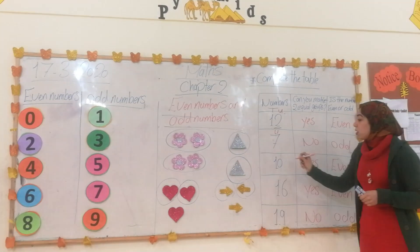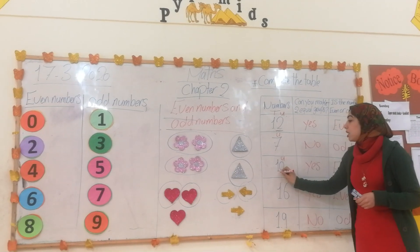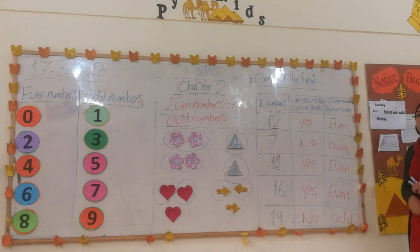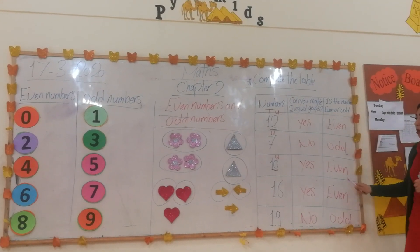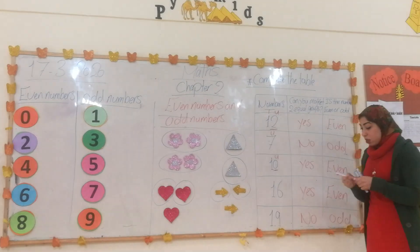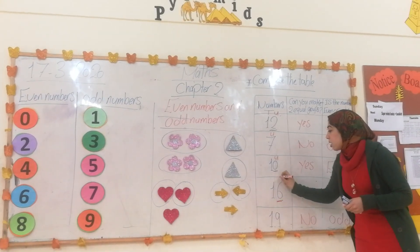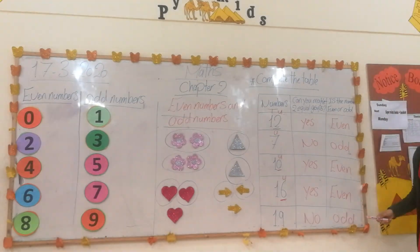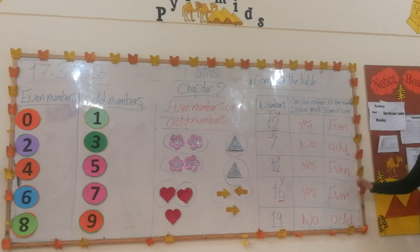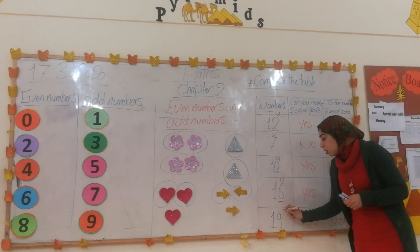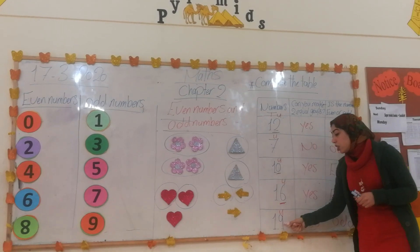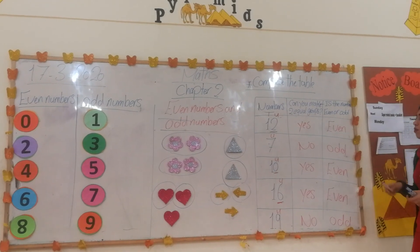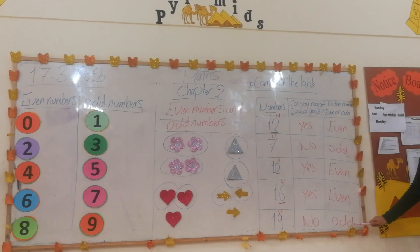We have number 10. Where is the ones digit? The ones digit is zero. Zero is even, so yes, we can make two equal groups — 10 is an even number. We have 16. The ones digit is 6. Six is even, so yes, we can make two equal groups — 16 is an even number. We have number 19. The ones digit is 9. Nine is odd, so we cannot make two equal groups — 19 is an odd number.